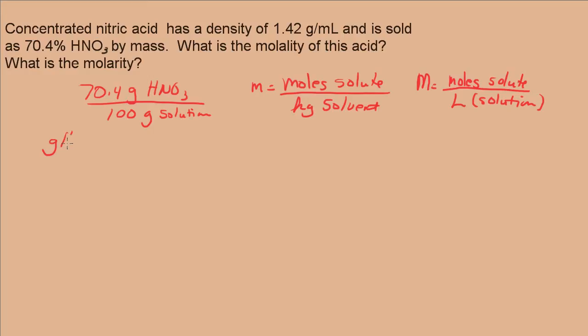Let's first calculate the number of grams of water. The grams of water would be simply 100 grams minus 70.4 grams and that gives us 29.6 grams of water, which is our solvent. And then, this is easily converted to kilograms. We have 0.0296 kilograms of solvent or water in this case.